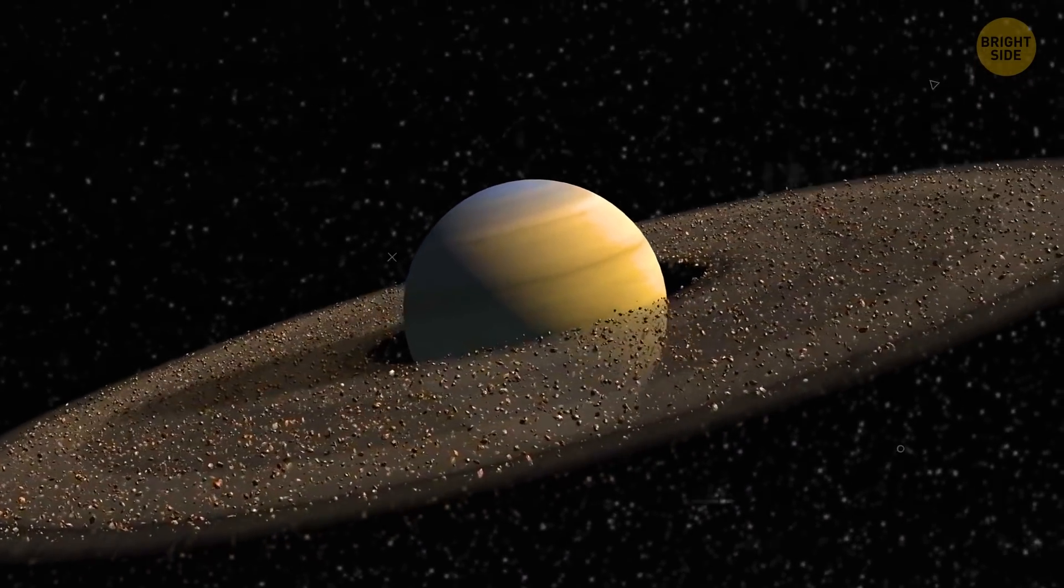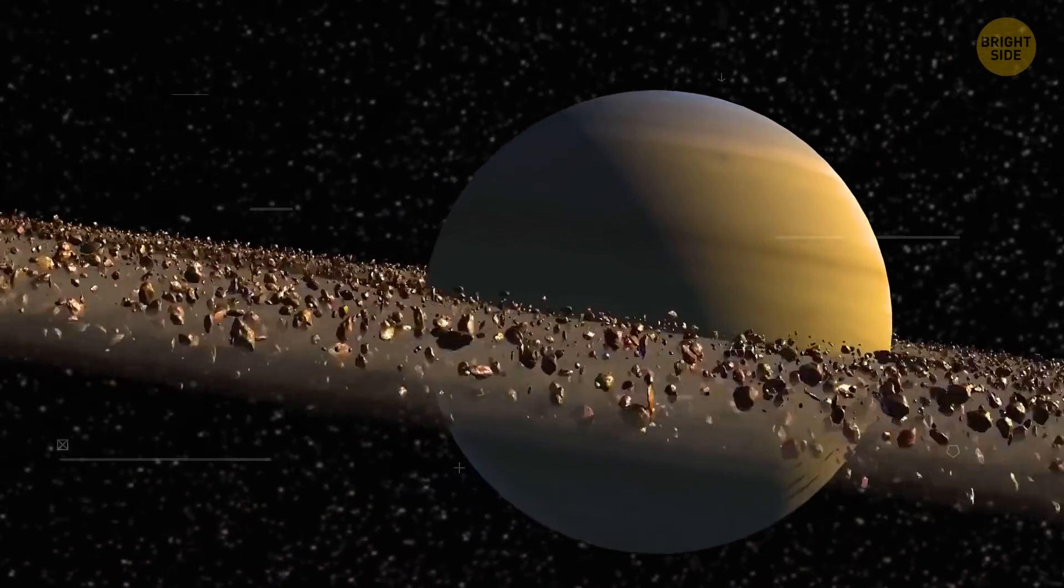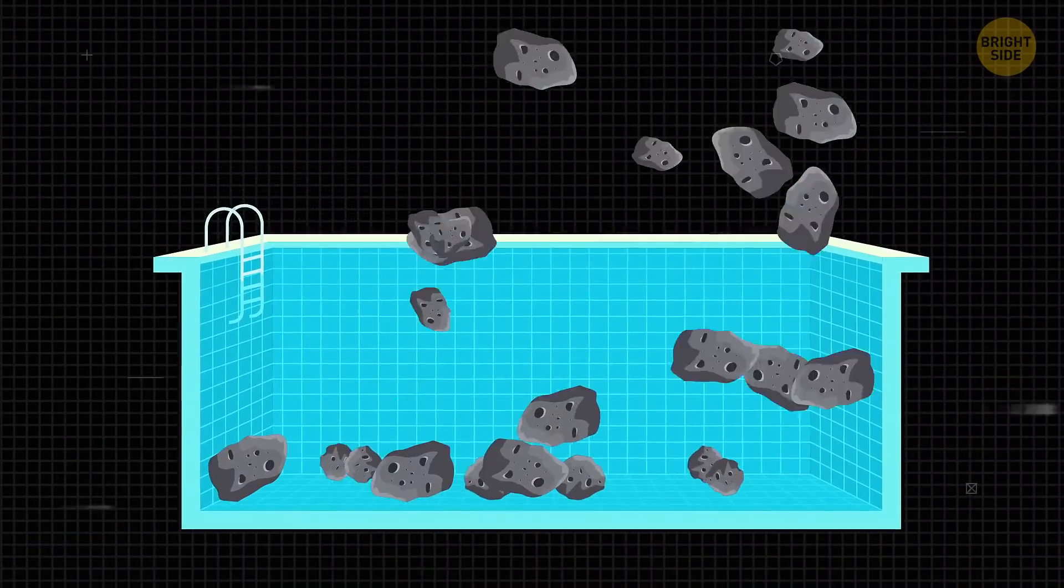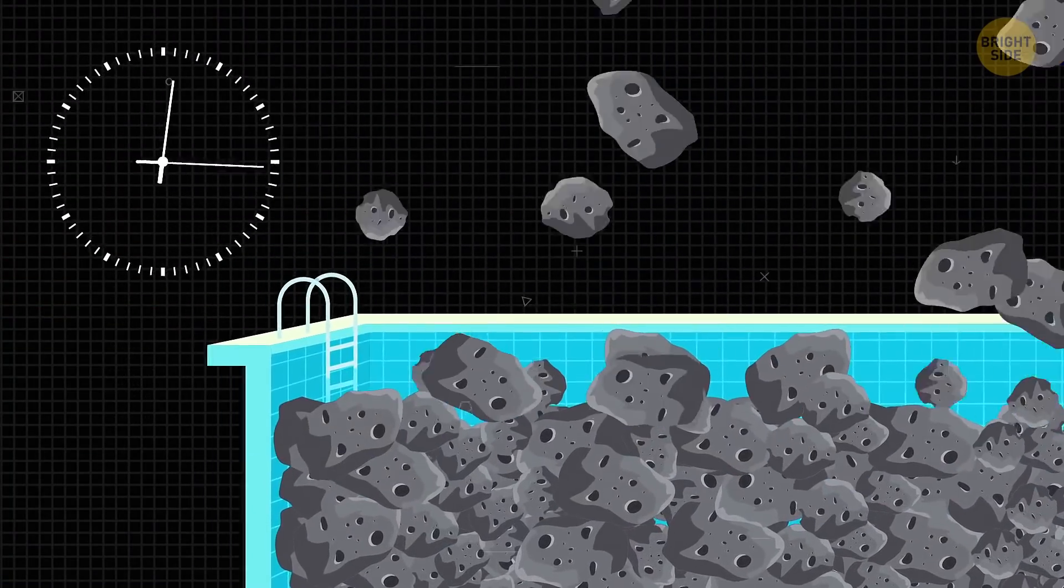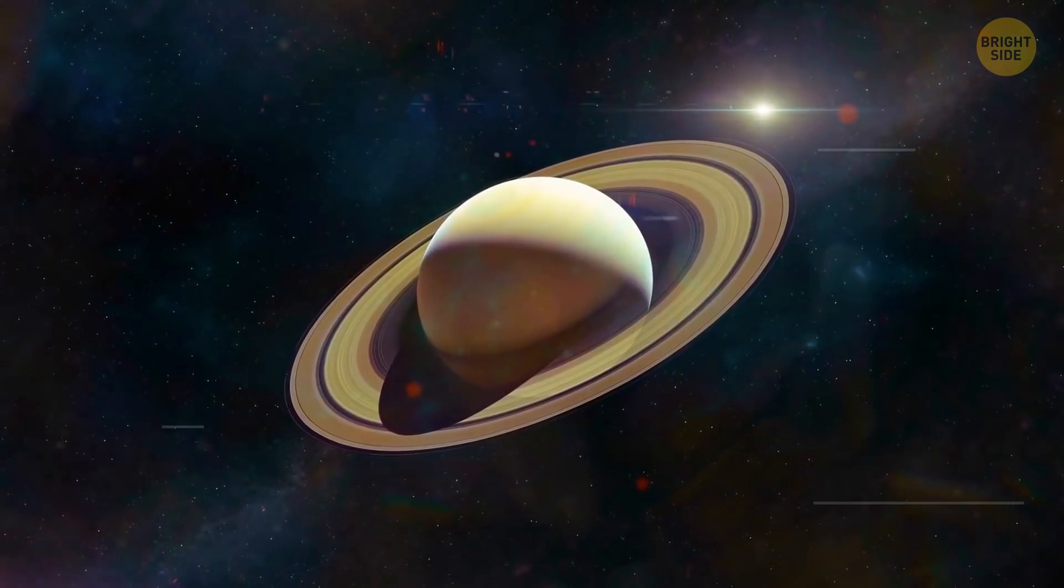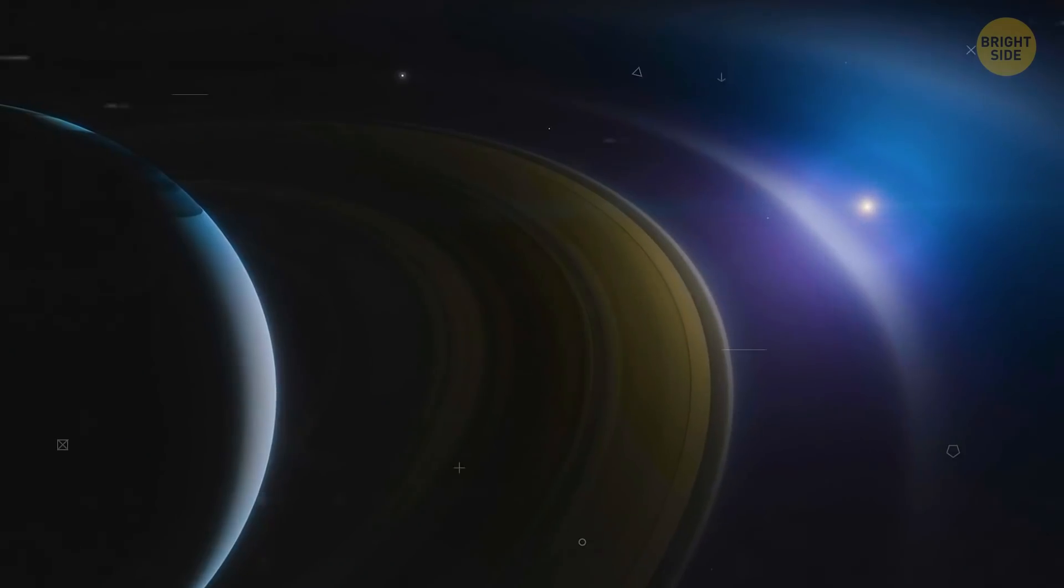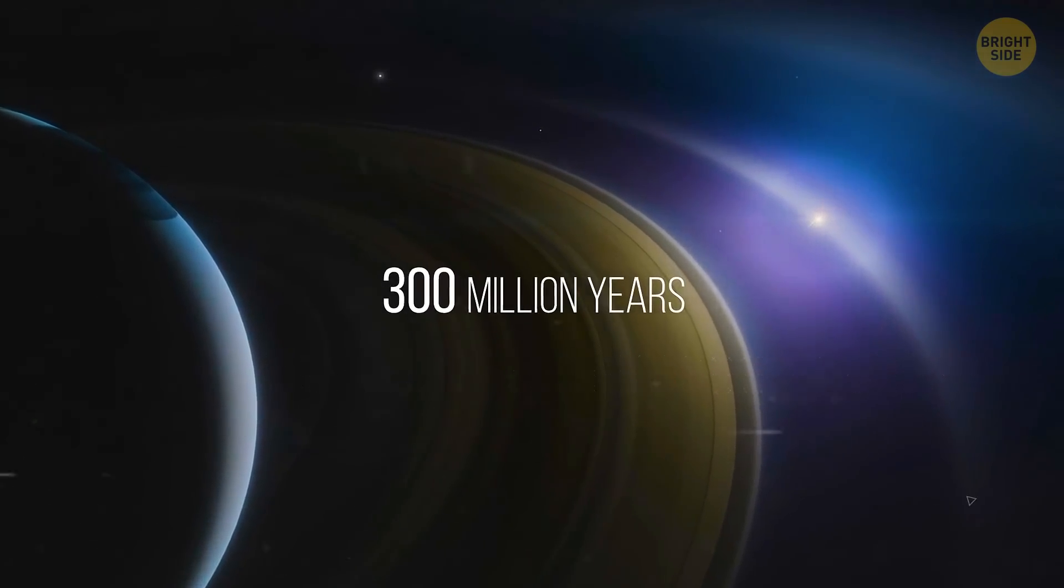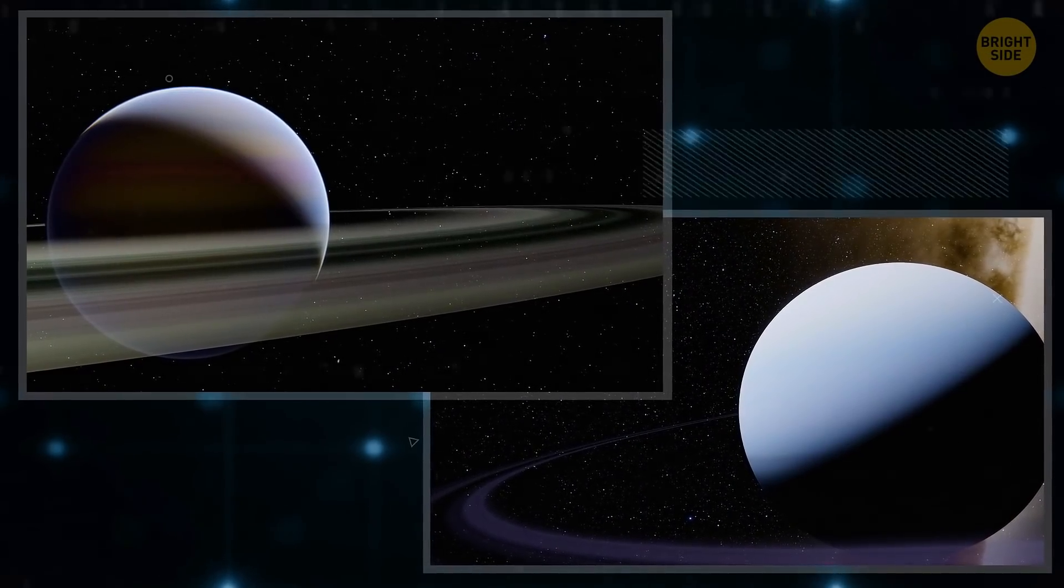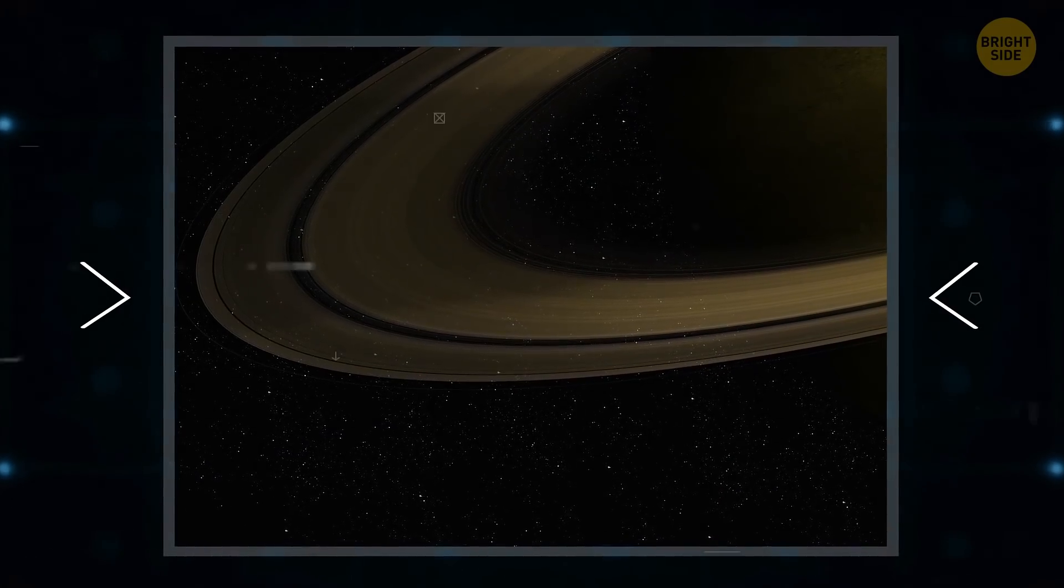Those famous rings are made up of dust, ice, and rock. Some as tiny as a grain of sand, others bigger than houses. But get this, Saturn's rings are raining down on the planet, enough to fill an Olympic-sized pool in a half an hour. At that rate, the famous blue ring system will disappear completely in 300 million years. By the way, Neptune, Uranus, and Jupiter also have rings. They're just not as visible and bright as Saturn's.